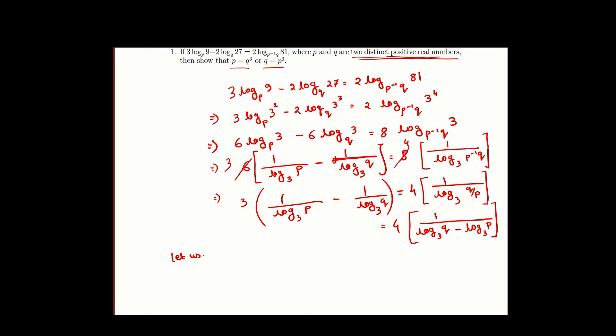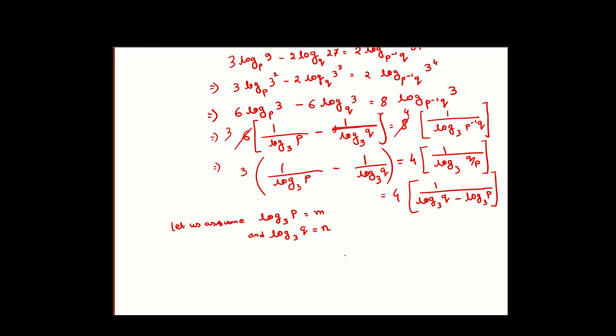So what we get? If we substitute this thing, we will get 3(1/M - 1/N) equals 4/(N - M). This will give (N minus M) over MN equals 4 over (N minus M).